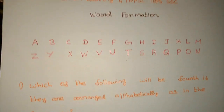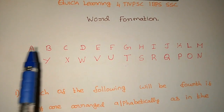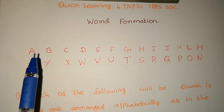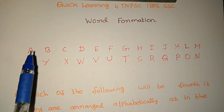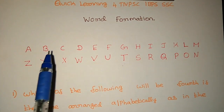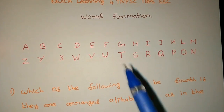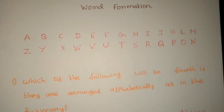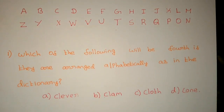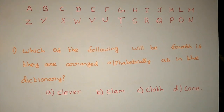First question. If we are talking about alphabet formation, we will talk about the alphabet A, B, C, D. The first question is: which of the following will be arranged alphabetically as in the dictionary?